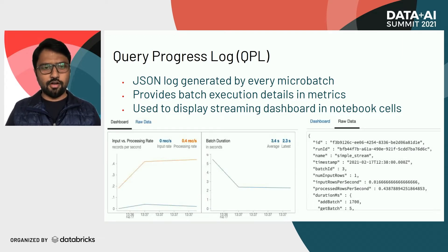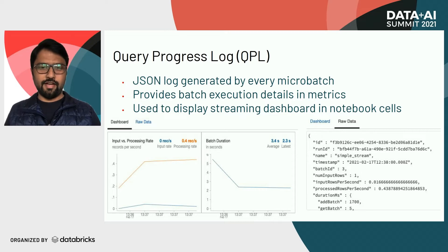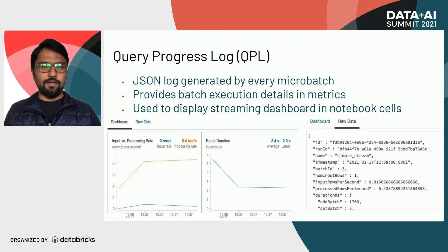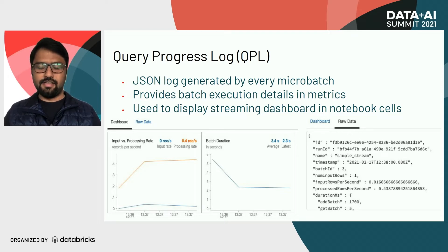This is how it normally looks. You have two tabs: one is the dashboard on the left-hand side, where we pick up key metrics from the JSON log and populate them graphically for users to understand how their stream is behaving. If you really want to see the raw metrics in JSON format, you can click on the raw data tab on the right-hand side, where the JSON itself is displayed in the notebook UI.